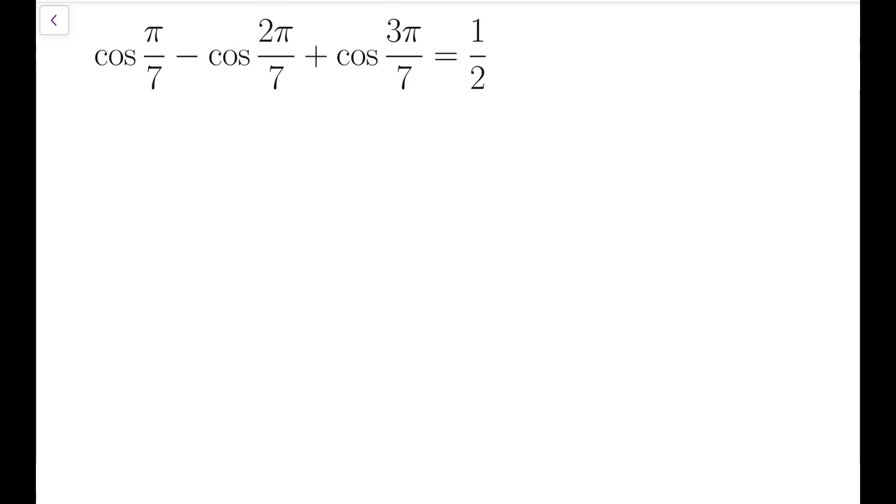My first step would be to replace this subtracting term into an adding term. So I'm going to rewrite this as minus cos of π minus 5π over 7, simply replacing 2π over 7 by π minus some other number.